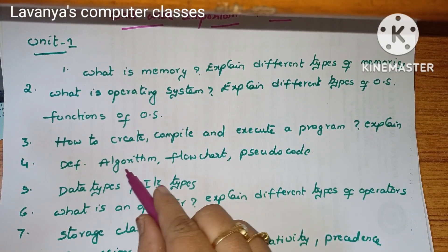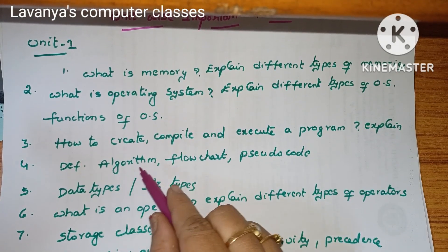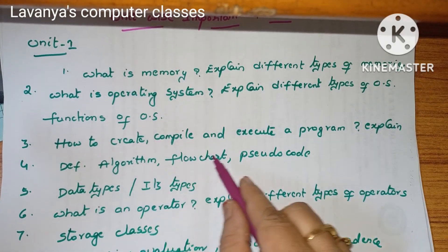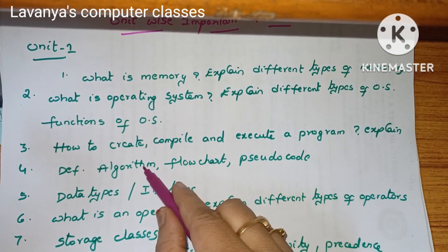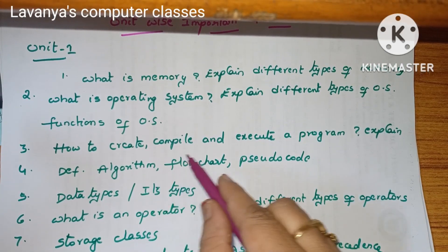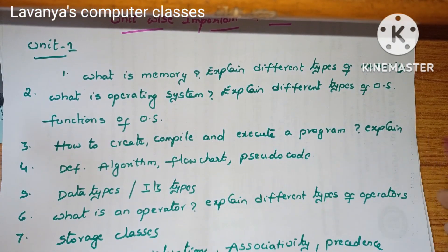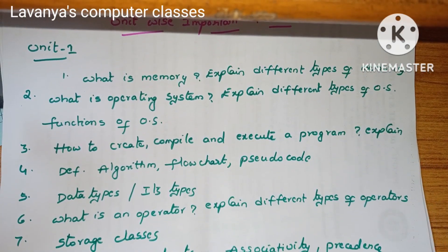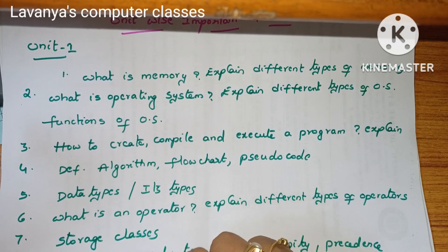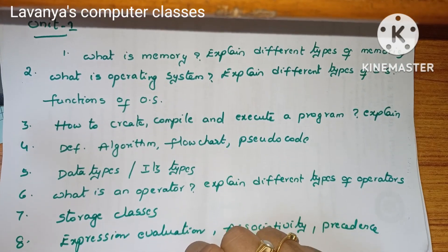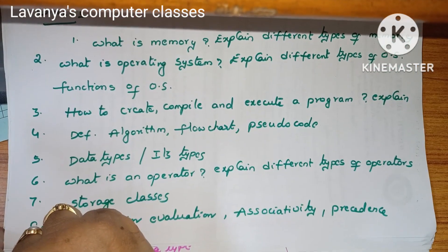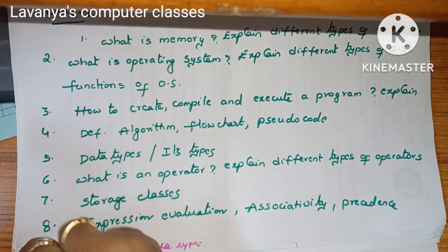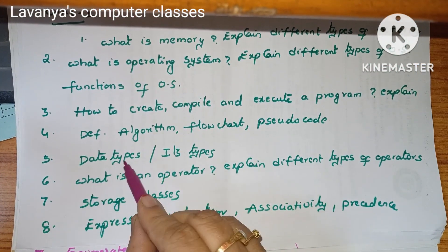Next, different definitions: algorithm, flowchart, and pseudo code. Note that algorithms also appear in unit 5, so concentrate more on unit 5. From here onwards these are the C language questions.